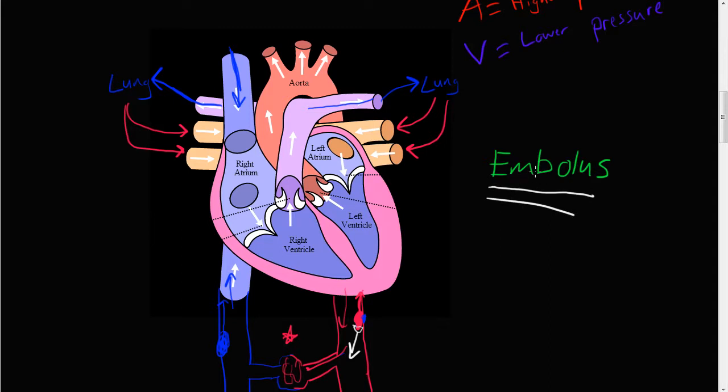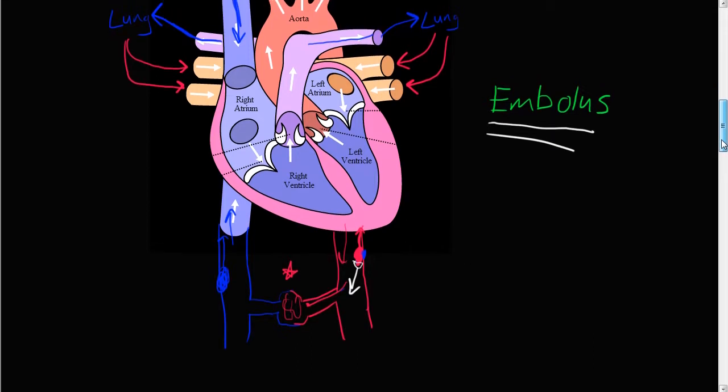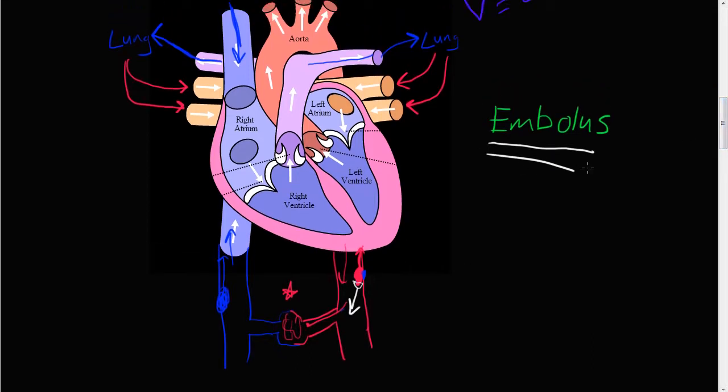We'll talk about these emboli that break off and shoot down the pipe and clog somewhere and start causing damage in later videos. But for terminology's sake, a thrombi or a blood clot is a formation of the coagulation cascade or the process that we just talked about in the last few videos. And an embolus is a piece of that blood clot breaking off and sliding down the pipe.